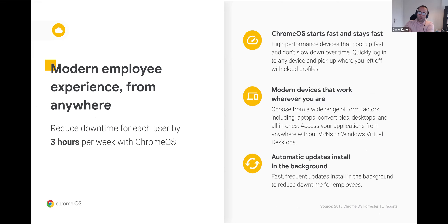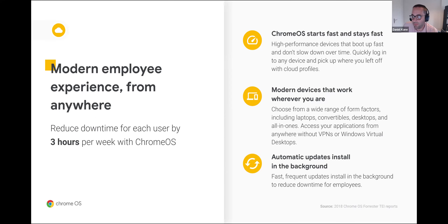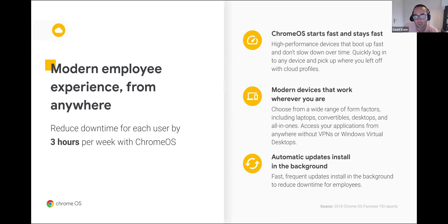Moving on to employee experience: we have data backing up that Chrome OS reduces downtime for the average user by three hours per week. This is based on things like faster booting — no hanging around waiting to get to the login screen. The devices work wherever you are; by leveraging Cameo for your applications, you don't need to be on a particular device or connecting via VPN to get access to your data. And we have a huge range of form factors: laptops, convertibles, desktops, and all-in-ones. Updates also save users a lot of time — users aren't postponing updates for fear of being locked out of their device.